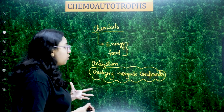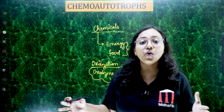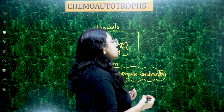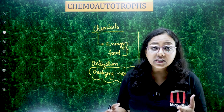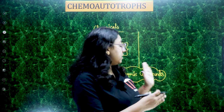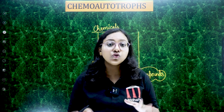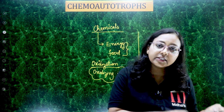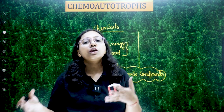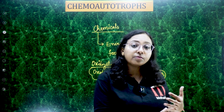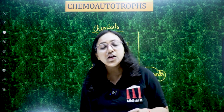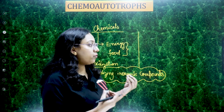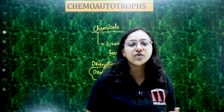The definition of chemo autotrophism: those organisms that utilize oxidizing inorganic compounds to produce energy and food are called chemo autotrophs, and the process is called chemo autotrophism. Similarly, photo autotrophs utilize sunlight to make food and get energy — that is photo autotrophism. Both are types of autotrophism.